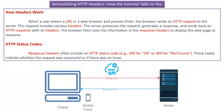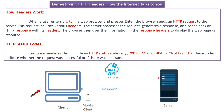Now we will see how headers work. When a user enters a URL in the web browser and presses enter, the browser sends an HTTP request to the server. The request includes various headers. The server receives the request, processes it, then generates a response and sends back an HTTP response with its headers.